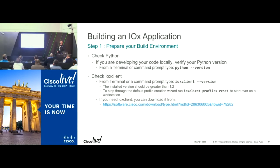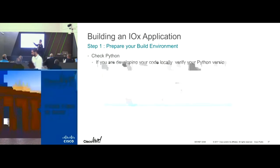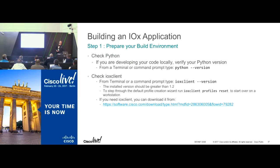For platform as a service, it's going to be based on the runtimes they support — Python 2.7.3 and Java 1.7, 1.8. You develop your code in Python, but definitely check your version because it won't support Python 3. Then use the IOX client to deploy, making sure your version is correct. If you're following what's in the slides, you need to make sure you have version 1.2 of the IOX client. You can get it from software.cisco.com.